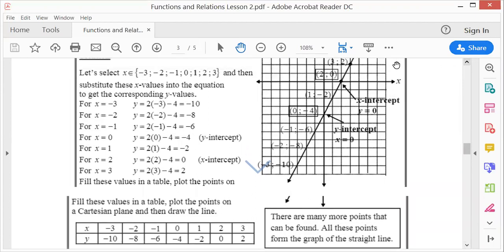x-intercept is there where y is 0. So let's see where they want y is 0. So therefore the x-intercept is 2. The y-intercept is there where x is now 0. So if x is 0 there, then you get a minus 4.